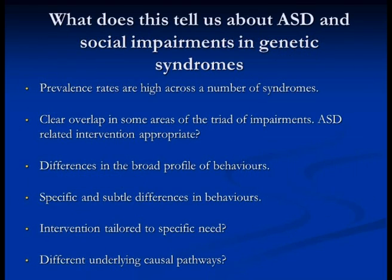So what does this tell us about understanding social impairments and ASD characteristics in genetic syndromes? Firstly, prevalence rates are high across a number of groups, and there clearly is overlap within particular areas of the triad of impairments — which might mean that some aspects of autism-specific intervention and resources might be useful in this population. But there are also very clear differences in the broad profile of behaviours in some groups, and some very specific and subtle differences when you look at particular behaviours within particular subdomains. That might tell us that intervention may need to be tailored specifically to the individual and to the particular syndrome, and it might also tell us that there are different underlying causal pathways.